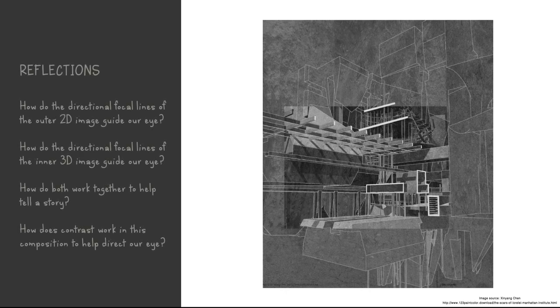In this composition, we have already discussed how it uses diverse levels of contrast, framing, and depth to tell a story. Reflect upon the directional focal lines of the overall composition and how they guide the eye to tell a story. Pause and give yourself time to reflect on the answer, and then begin the video once again to bring our talk to a conclusion.